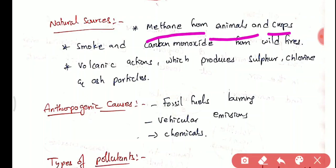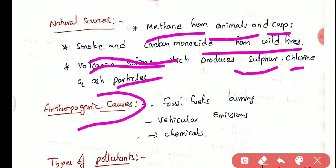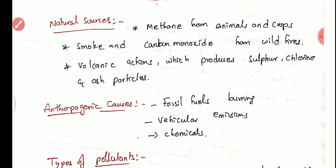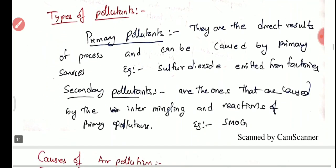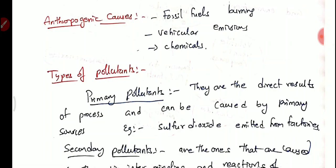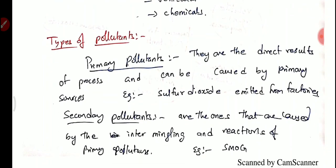Methane from animals and crops, smoke from wildfires, and volcanic eruptions producing sulfur, chlorine, and ash particles are all natural sources of air pollution. Chemicals produced by factories are anthropogenic causes — 'anthro' meaning man — where man is responsible for these pollutants.